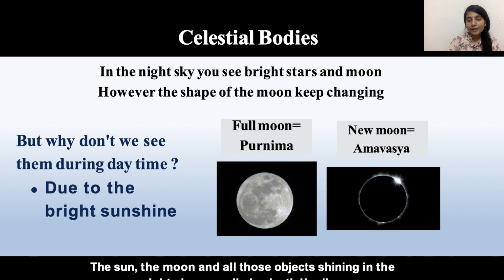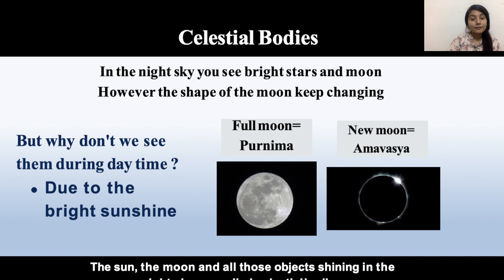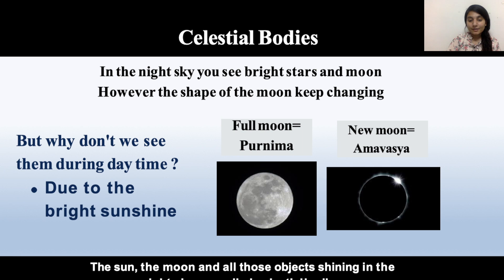You may have heard about Purnima and Amavasya. Purnima is the full moon and Amavasya is the new moon. In a one-month period, they occur with a gap of 15 days — first the new moon (Amavasya), then the full moon (Purnima). So this is about the celestial bodies.